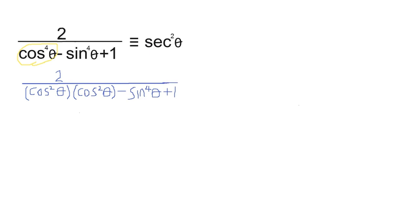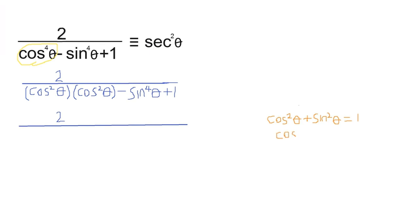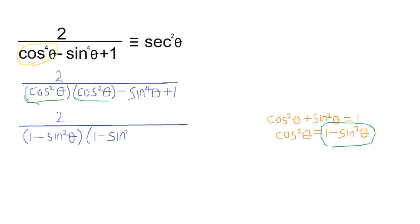Since our aim is to simplify, we use the identity cos²θ + sin²θ = 1, making cos²θ the subject: cos²θ = 1 - sin²θ. So the expression in brackets equals 1 - sin²θ, and we replace those in brackets with 1 - sin²θ.